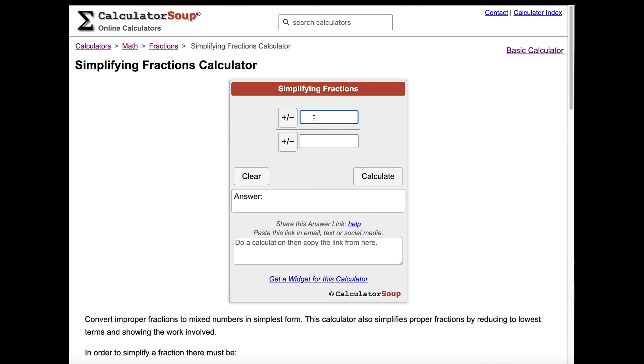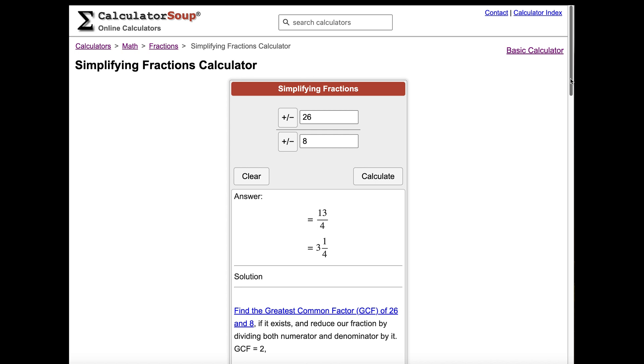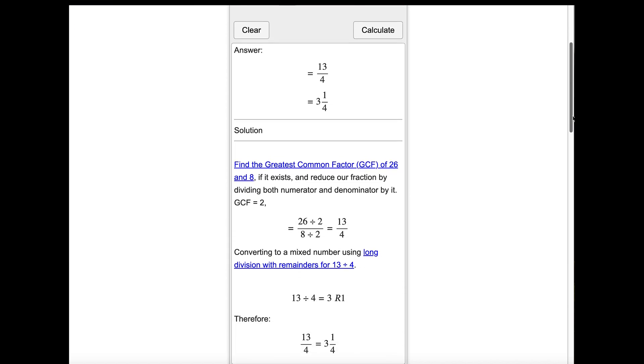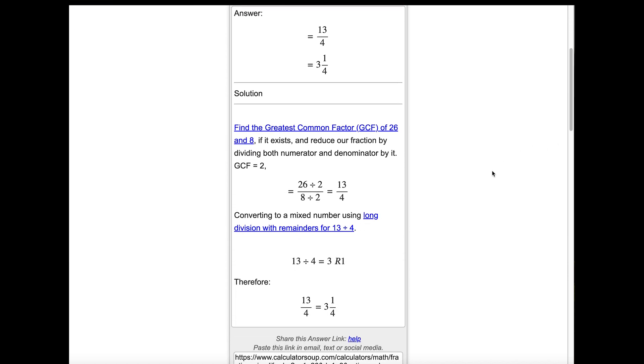Let's do one more example, 26 eighths. After pressing the Calculate button, you can view the steps to get the answer below. The greatest common factor of 26 and 8 is 2, so divide 26 by 2 to get 13, and divide 8 by 2 to get 4. Next, convert 13 fourths to a mixed number. 13 divided by 4 is 3 remainder 1, so 3 is the whole number, and 1 is the new numerator over 4. Our simplified answer is 3 and 1 fourth.